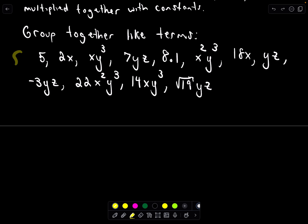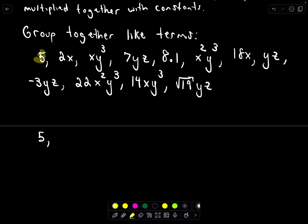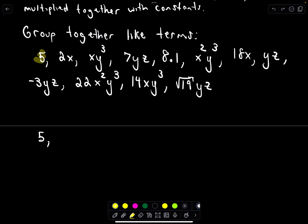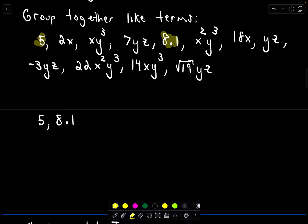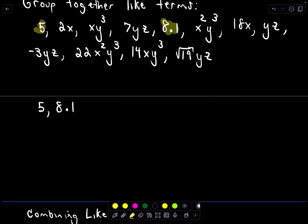I've got a list of random terms — let's group them together. Starting with the constant 5: I'm looking for just a number. 2x has a variable, same with the next ones. But 8.1 is just a number, so that would be a like term with 5 — they're both constants. I don't see any other constant terms, so those two go together as like terms.